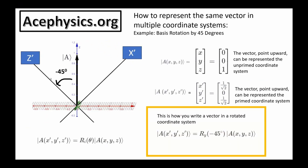I'll begin by discussing how to represent the same vector in multiple coordinate systems. There are two coordinate systems in this picture: the unprimed system with the x-axis, z-axis, and y coming out of the page, and a prime coordinate system rotated negative 45 degrees about the y-axis. Vector A points straight up in space regardless of the orientation of the coordinate system. In the unprimed system, A has 0x, 0y, and a magnitude of 1 in the z direction.